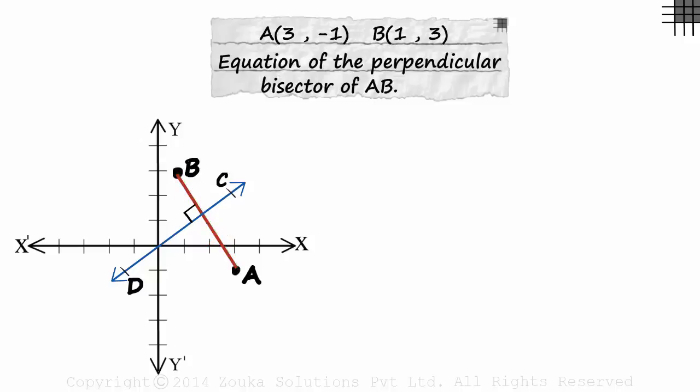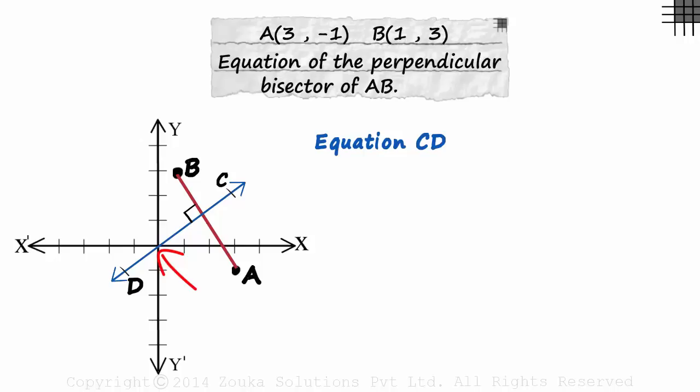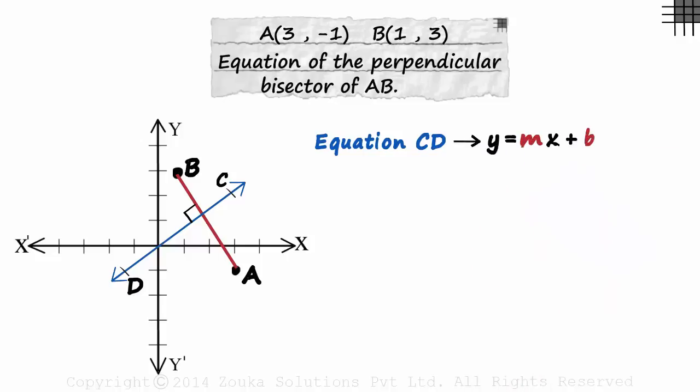Now we've been asked to find the equation of this blue line, the equation of line CD. With the slope-intercept form, let's assume that its equation is Y is equal to MX plus B. How do we find the equation? We need M and B. M is the slope of CD and B is its Y-intercept.